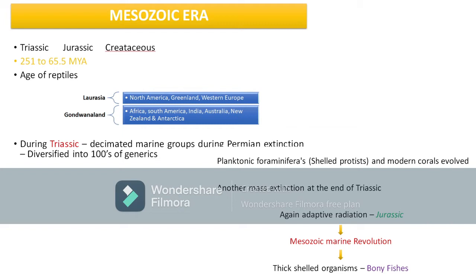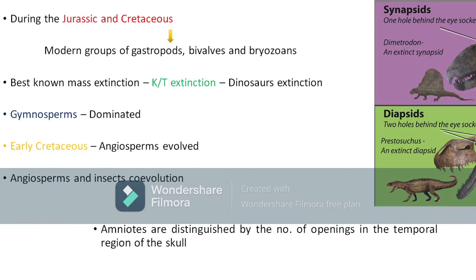The Mesozoic marine revolution also happened during this time. During the Jurassic period we can see many organisms due to high amounts of oxygen and nitrogen in the environment. Dinosaurs and dinosaur-related reptiles appeared even in marine environments. Thick-shelled organisms and bony fishes also evolved during the Jurassic period.